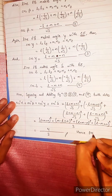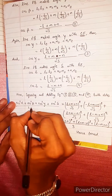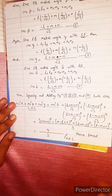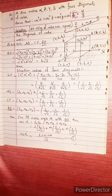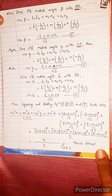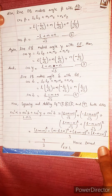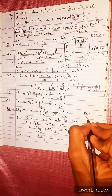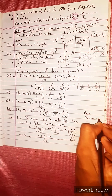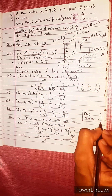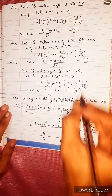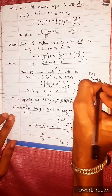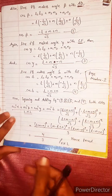Therefore, cos²α + cos²β + cos²γ + cos²δ = 4/3. Hence proved. LHS equals RHS. This completes the proof across page 1 and page 2.